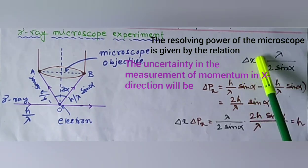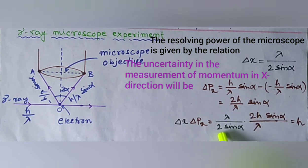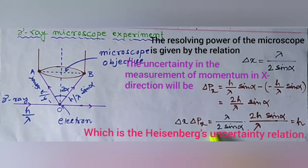Therefore, delta x into delta px equals lambda by 2 sin alpha into 2h by lambda sin alpha equals h, which is Heisenberg's uncertainty relation.